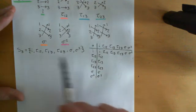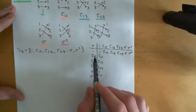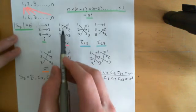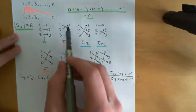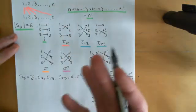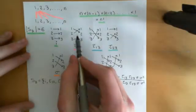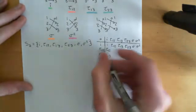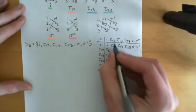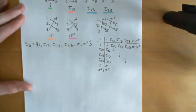Some other easy entries are where you square the transpositions. When you square tau(1,2) — transposing 1 and 2 twice — you move 1 to 2 and then 2 back to 1, returning to the identity. Similarly, tau(1,3) squared equals the identity, and tau(2,3) squared equals the identity. Squaring a transposition always returns the identity element.